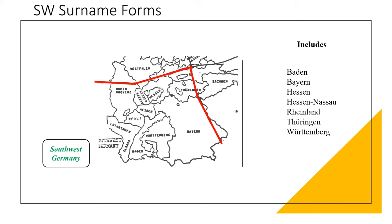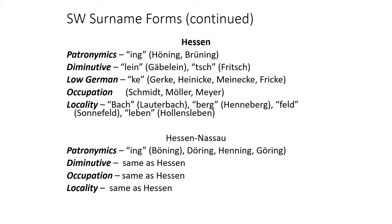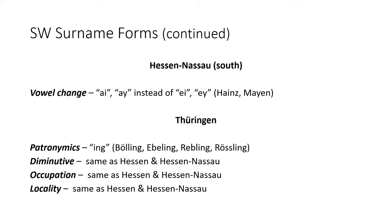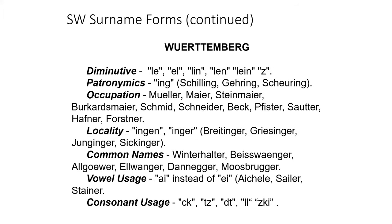The Southwest name forms include the areas of Baden, Bayern, Hessen-Nassau, Hessen, Rhineland, Turingen, and Württemberg. These are the surname forms for Baden and Southern Rhineland. The surname forms for Hessen and Northern Hessen-Nassau are nearly the same. Hessen-Nassau's South had a vowel change, and Turingen is similar to the Hessen areas. The difference between Bayern and Bayern West are the vowel, consonants, suffix, and locality usage. This last one shows the surname forms for Württemberg.